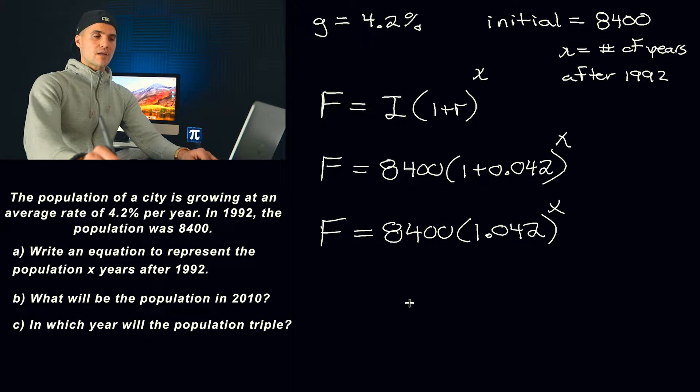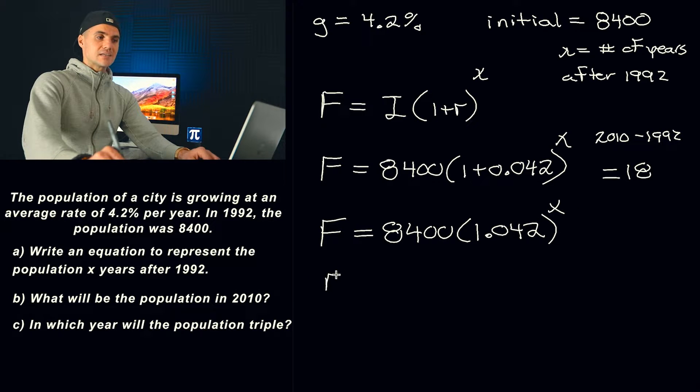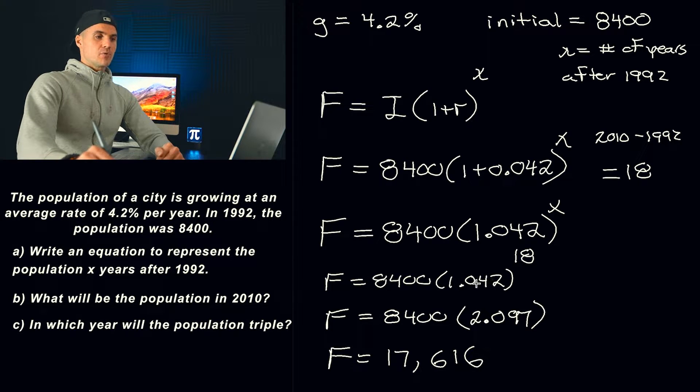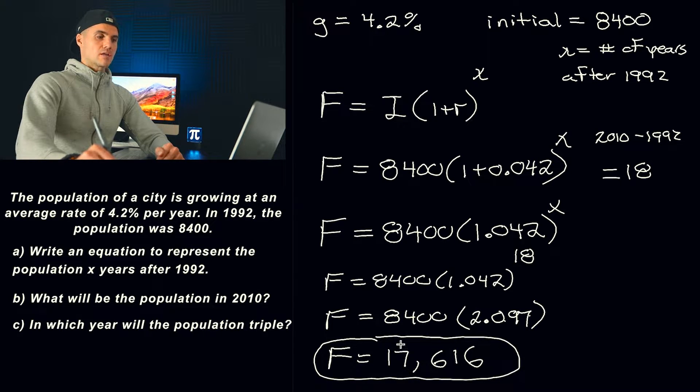Now in part A, what they're asking us for is what's the population going to be in the year 2010? So first thing we have to do is plug in something for x here. Now remember, x is the number of years after 1992. So if you take 2010 and subtract 1992, how many years went by? Well, basically 18. So we would plug in 18 for the x value, and then you would solve for the f value. And doing the algebra here, you would take 1.042 to the power of 18. You do the exponent first, you'd get 2.097. Then you do the multiplication, 2.097 times 8,400. And then you get a population of 17,616. So after 18 years, or in the year 2010, that's what the population is going to be.